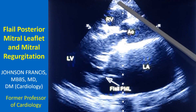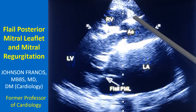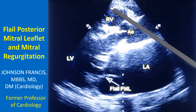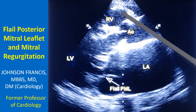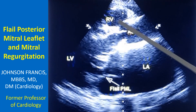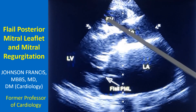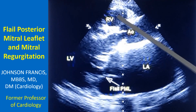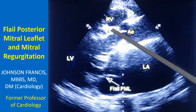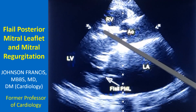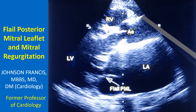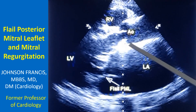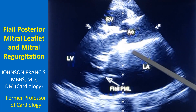Here this represents the anterior chest wall. You can see the anterior wall of the right ventricle and a portion of the right ventricle. This is the outflow region of the right ventricle. Below that is the interventricular septum. This is the anterior wall of the aorta and the posterior wall of the aorta.